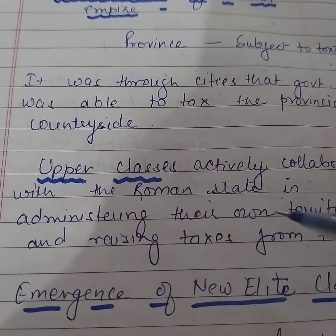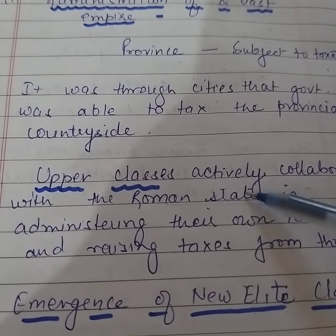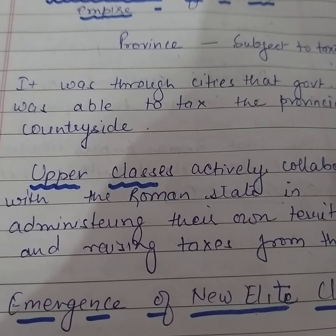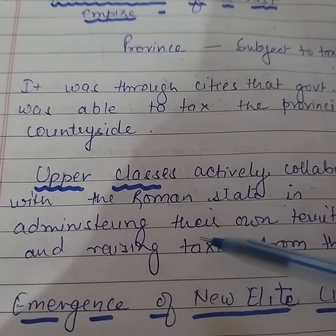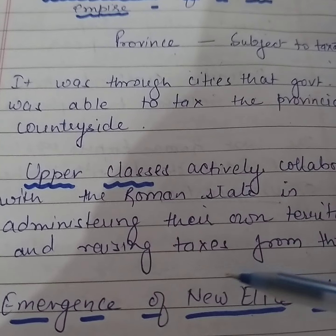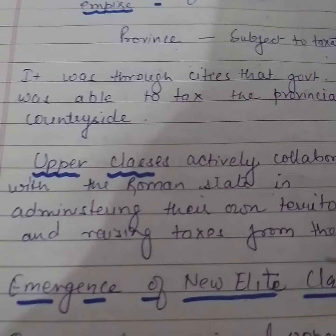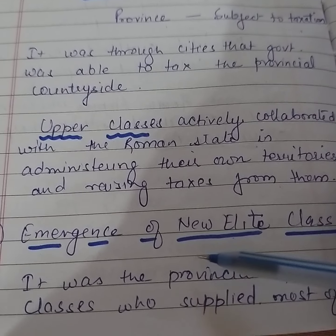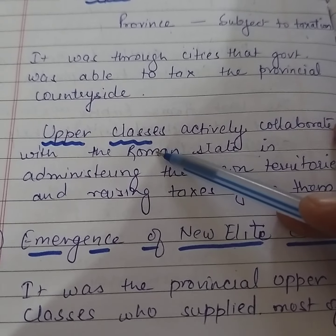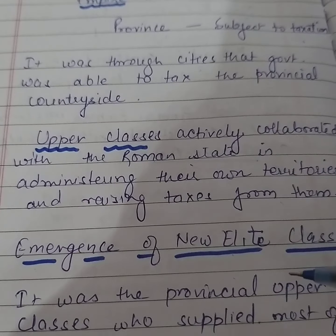The upper class of the countryside actively collaborated with the Roman state — first in administering their own territories, and second for raising taxes. This led to the emergence or rise of a new elite class. The elite class here refers to the upper classes of these provinces.